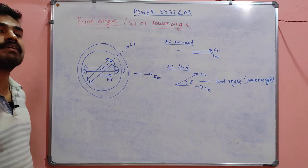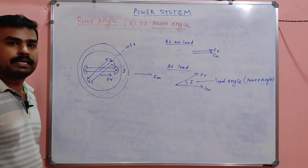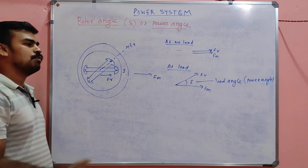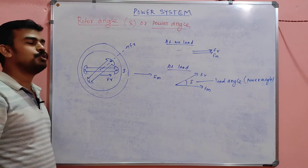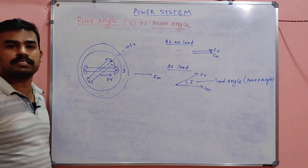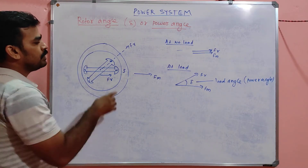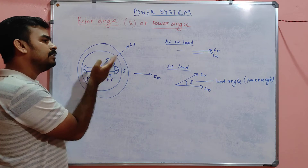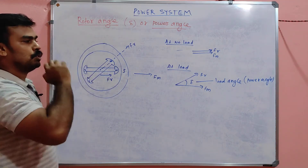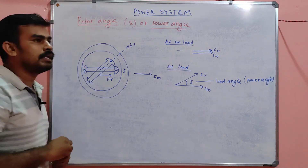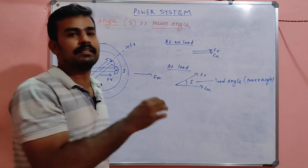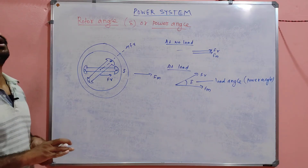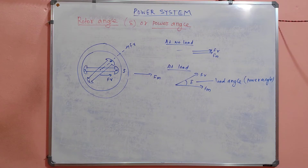The machine will continuously run with a lag angle del between fr and fm. If you keep increasing the speed, the rotor angle del will increase further. There is a limit to how much the rotor MMF angle can increase without affecting stability, which will be discussed later. Even so, there is still magnetic locking between N and S, and the machine runs continuously without stability being affected. In short, the rotor angle or power angle is simply the angle between the stator MMF and the rotor MMF.